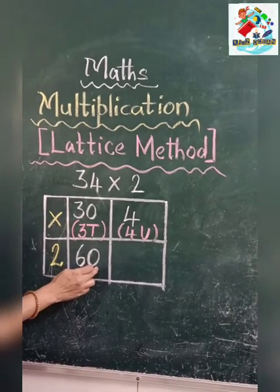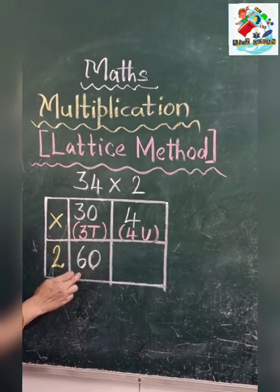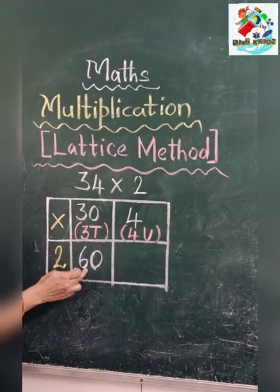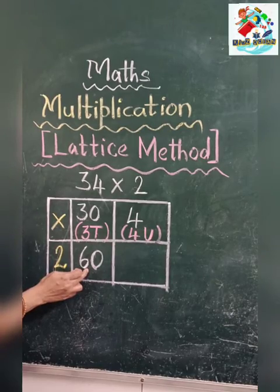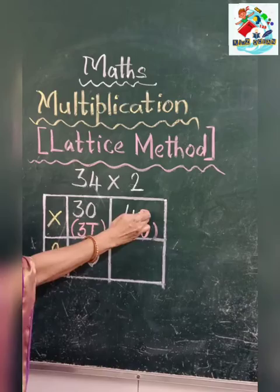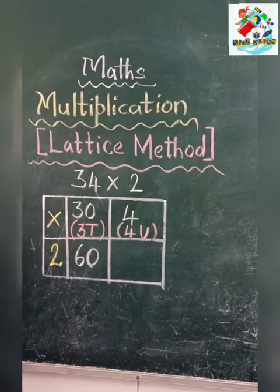You have to write 1 then 0, so what it becomes? 60. So 30 times 2 is 60. So like this you got the answer 60. Now after completing this, you have to do 4 times 2.